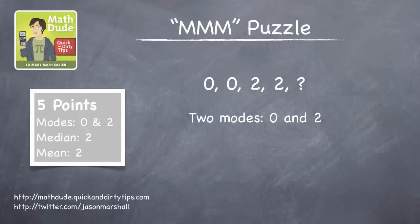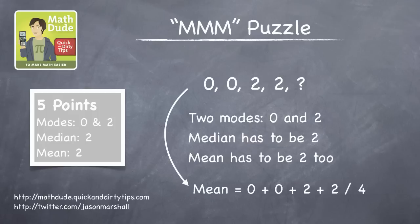Now, we also know that the median of the five numbers has to be 2, and the mean has to be 2 as well. Right now, the mean of the first four numbers is 1, so we know that the fifth and final number has to be larger than 2 to get a mean of 2.